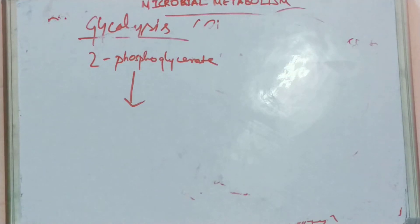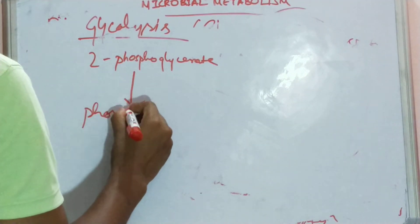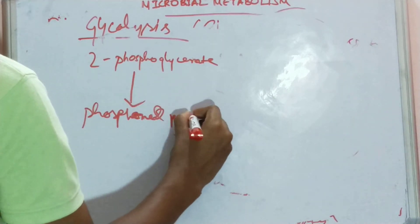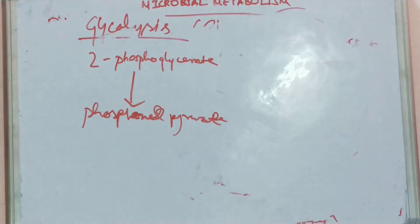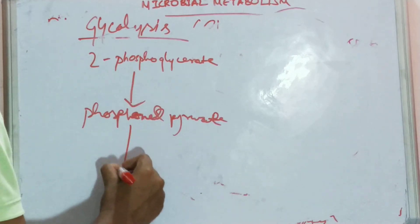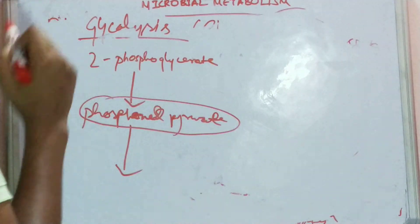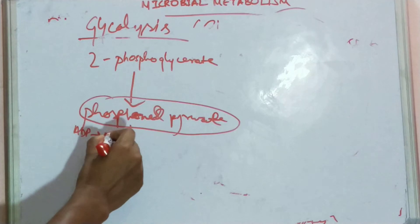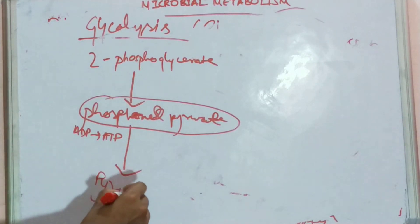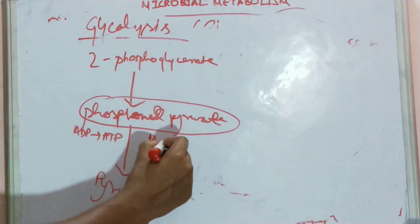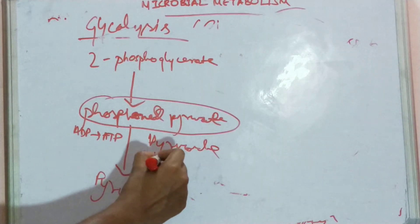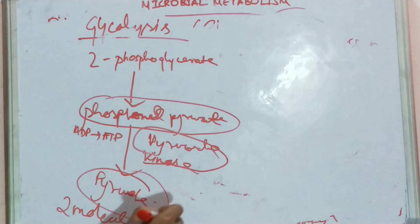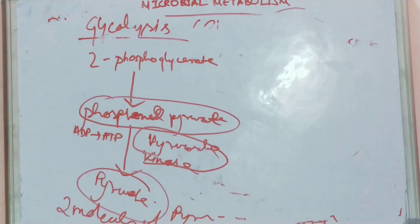From 3-phosphoglycerate it moves to 2-phosphoglycerate after giving one phosphate molecule. From 2-phosphoglycerate it forms phosphoenolpyruvate, which is the most important compound in the formation of pyruvate. Phosphoenolpyruvate returns the energy invested in the first step, converting ADP back to ATP, and forms pyruvate through pyruvate kinase. This results in two molecules of pyruvate. That's what glycolysis is.